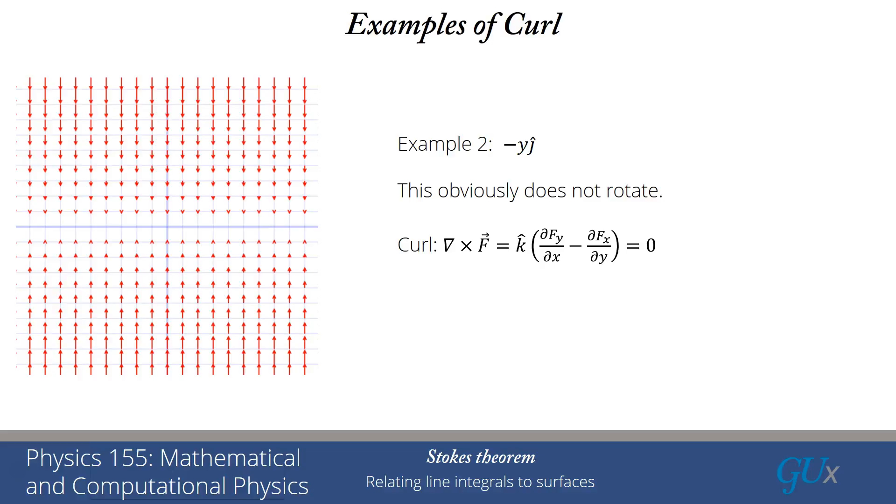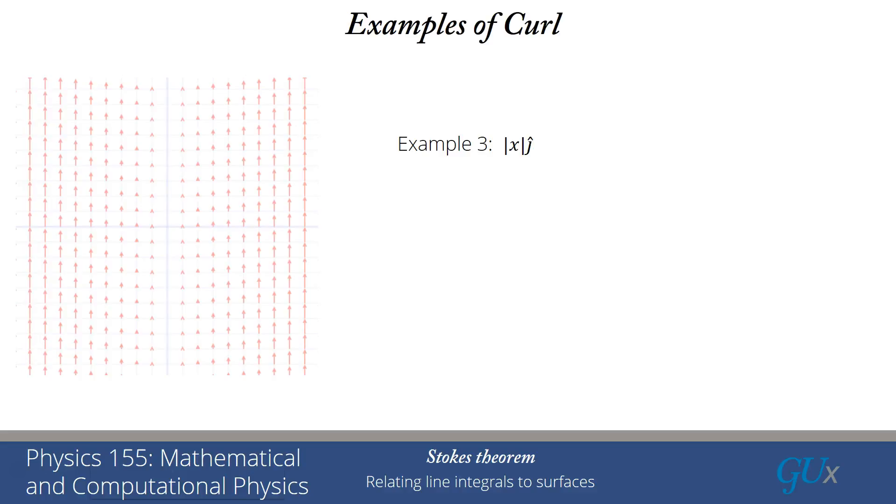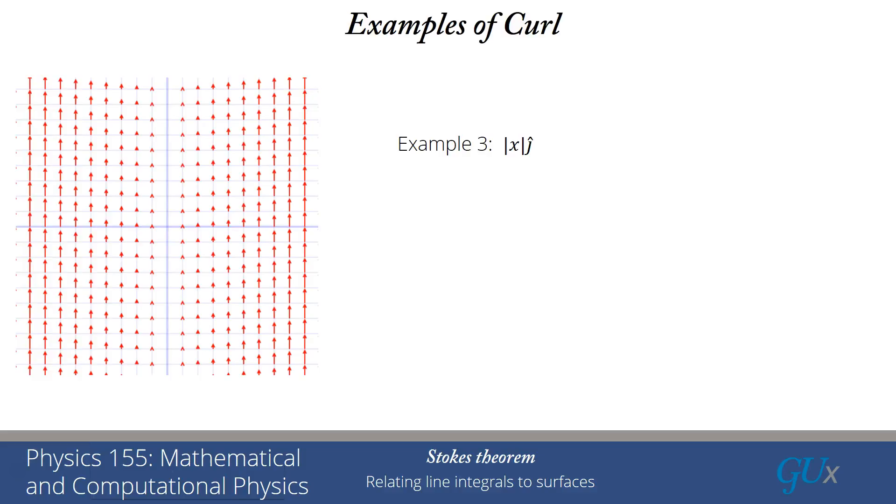Unfortunately, that doesn't work all of the time. Let's take a look at this example, which looks very similar to the one we just looked at. It's absolute value of x times j hat. Looks quite similar. I have these vectors all pointing in the same direction, increasing in size. There isn't even a turnaround here because I took the absolute value. I don't really need to do that, I just did that to further emphasize that this thing isn't rotating at all.